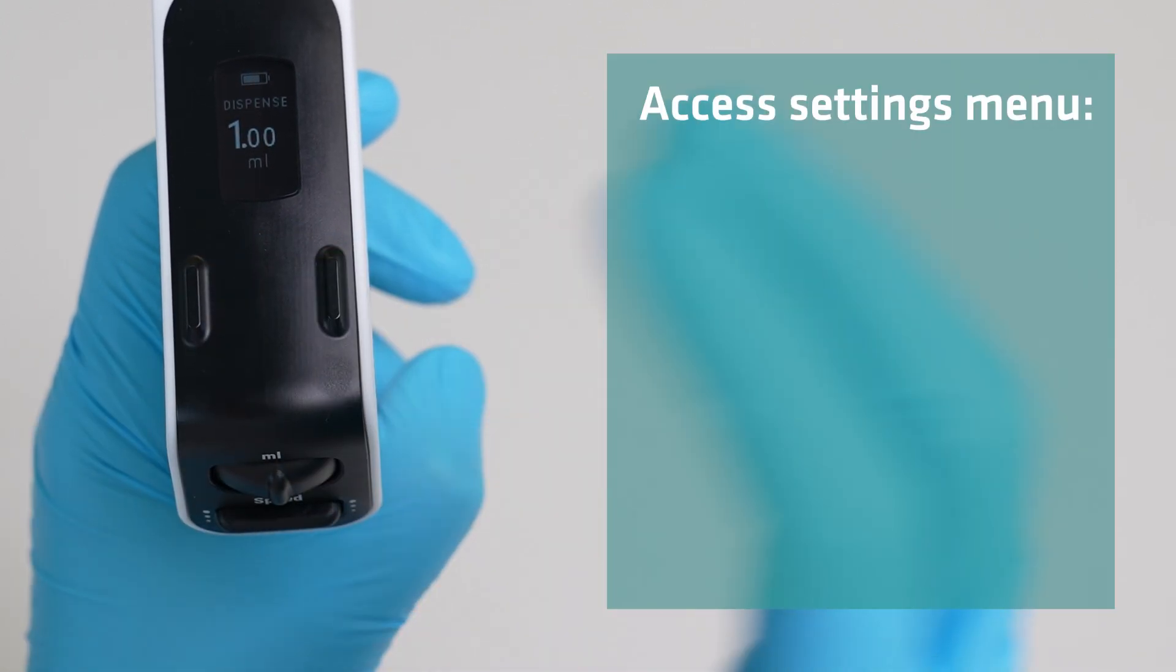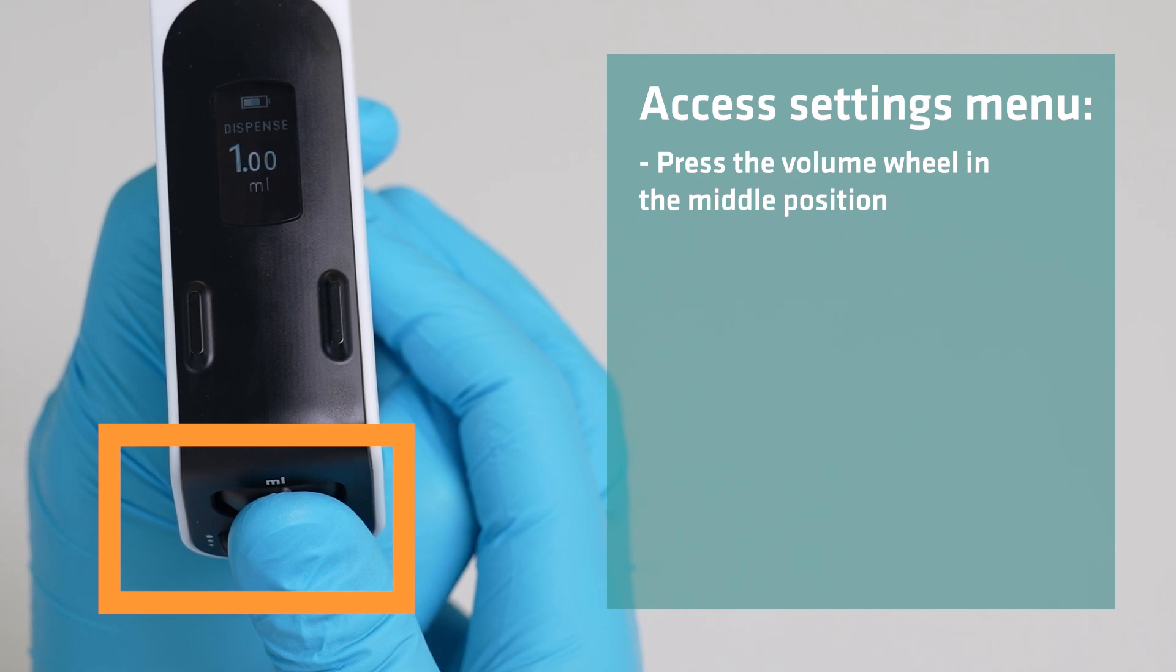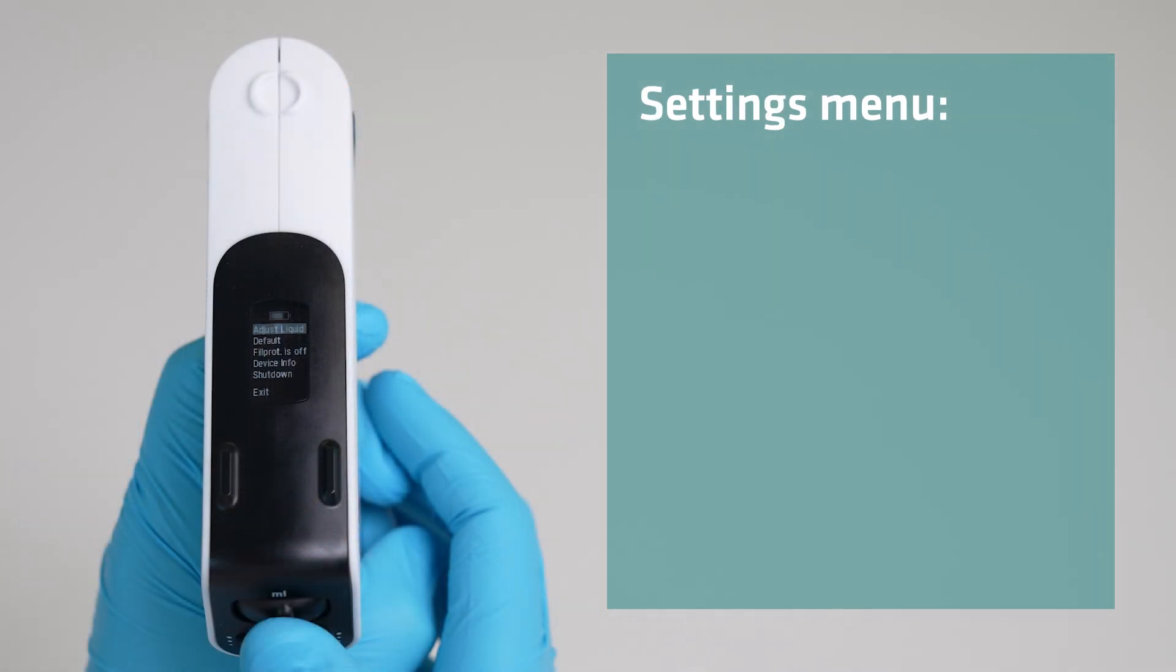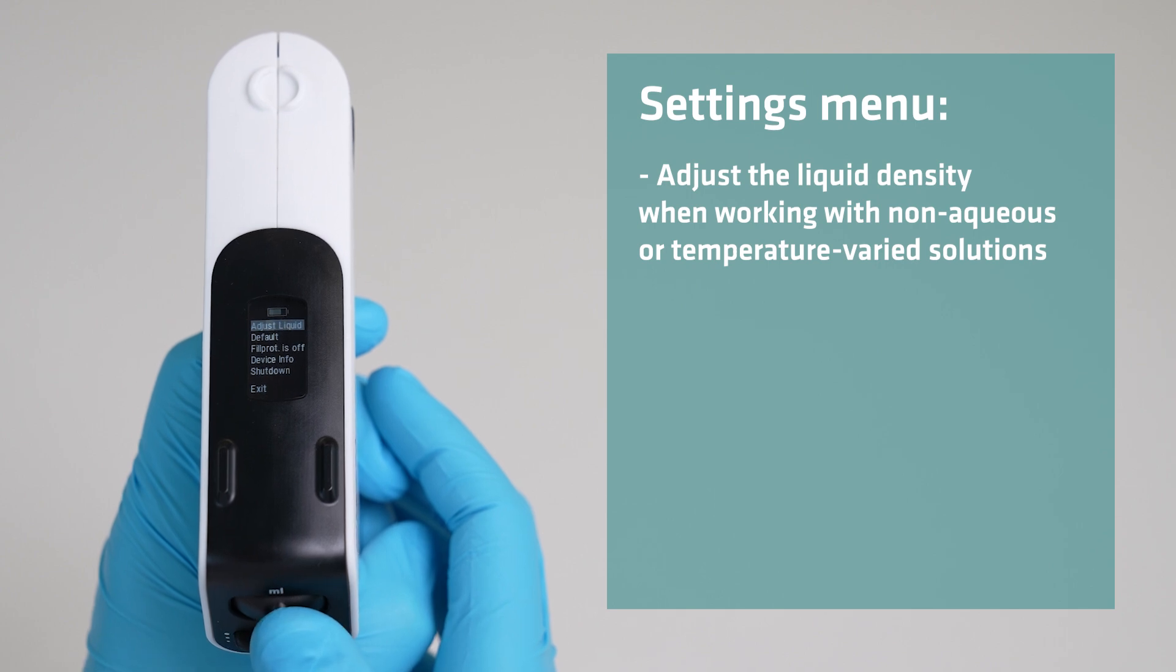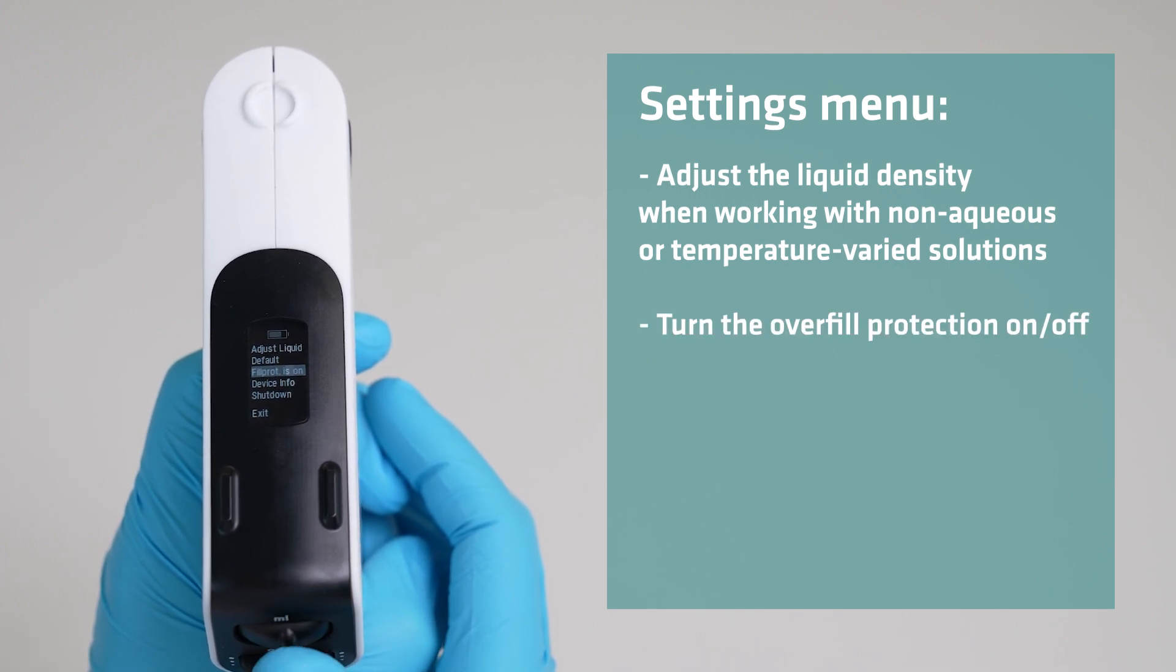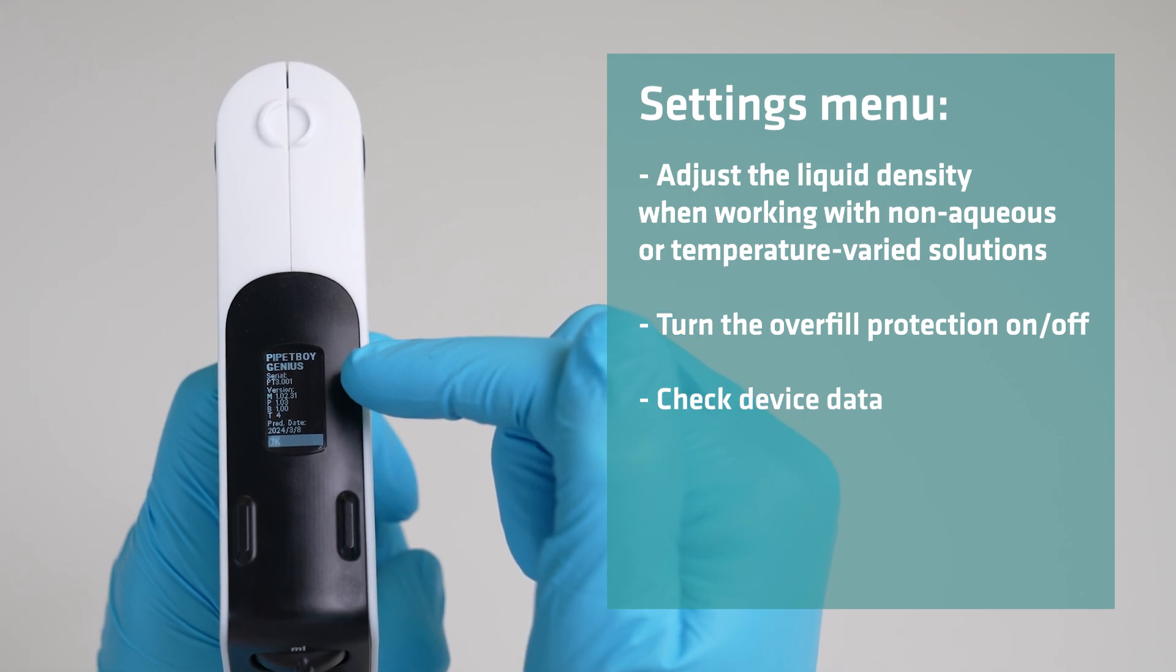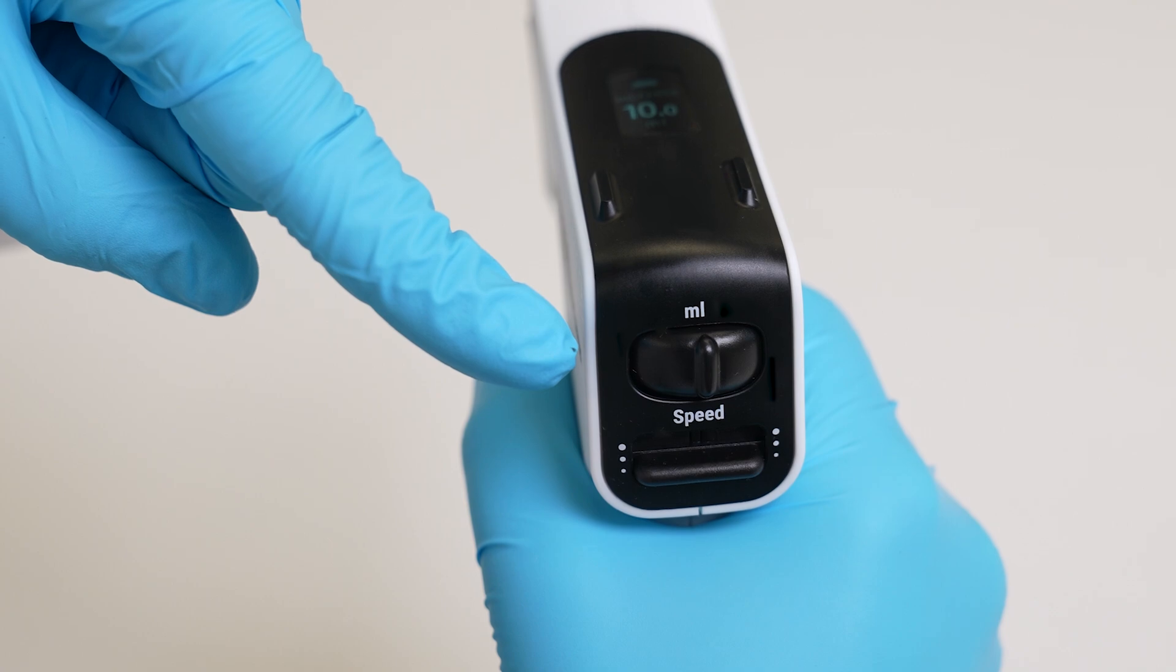Lastly, there's a settings menu that provides more access to the instrument. To access the settings menu, press the volume wheel in the middle position. In the settings menu, you can adjust the liquid density to improve precision when working with non-aqueous or temperature-varied solutions, turn the overfill protection on or off, check the serial number, or switch off the instrument. Use the wheel to navigate through the settings and press the wheel to select each option.